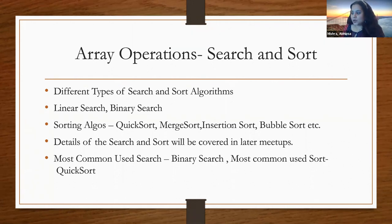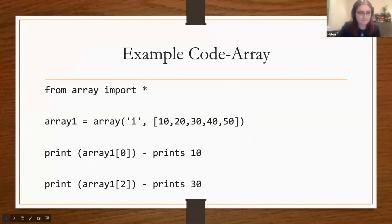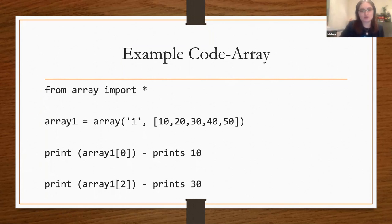Pausing here for questions. Someone asked about the code sample — specifically about the 'i' notation. In Python, 'i' means it's an integer array, but basically in Python you can get away with just whatever is in the square brackets, like 10 to 50. It's not needed to put an 'i' there.